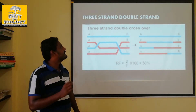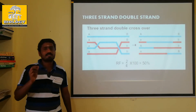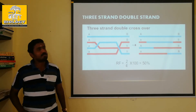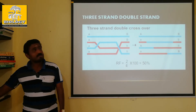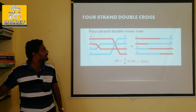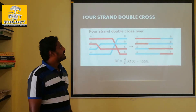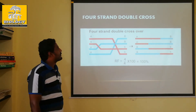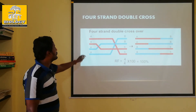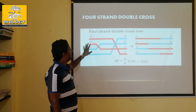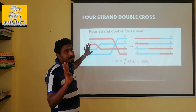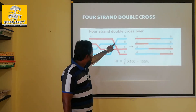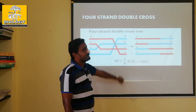That is called three strand double crossing over. Next: four strand double crossing over. This is four strands of a shape — 1, 2, 3, 4.